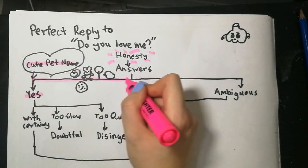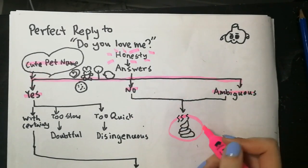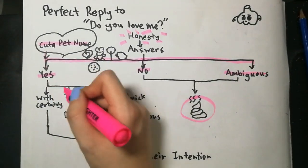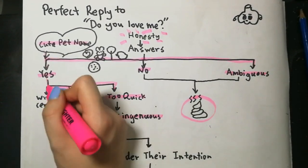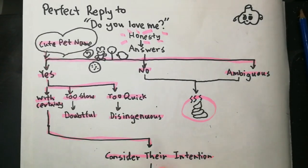Sweetheart, obviously I have to say yes. Can you imagine if I said no or not sure? I'd get so much crap for it. And when I answer fast, you say I'm not genuine. When I answer slow, you say I'm doubtful. Of course I'll say yes. Why would you ask me something like this? Are you unwell?